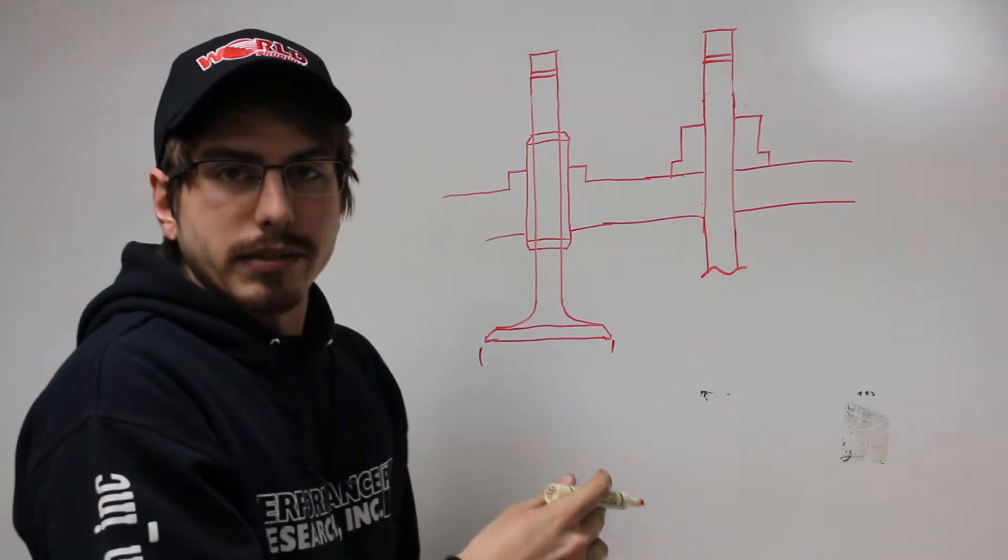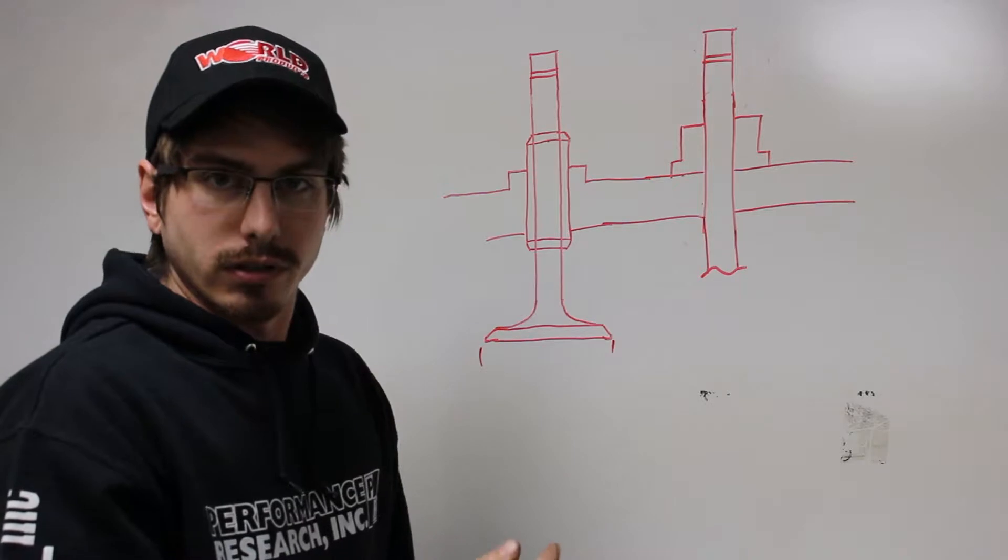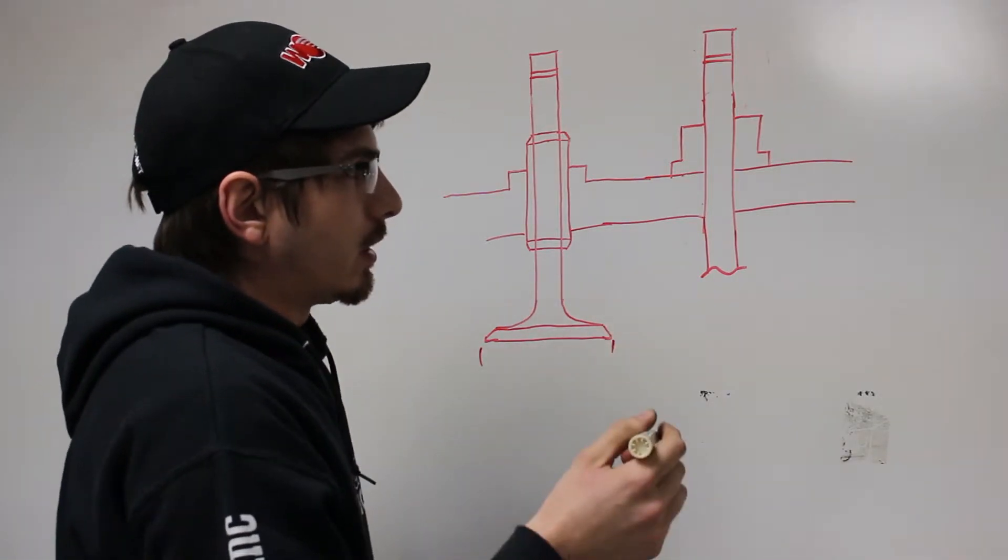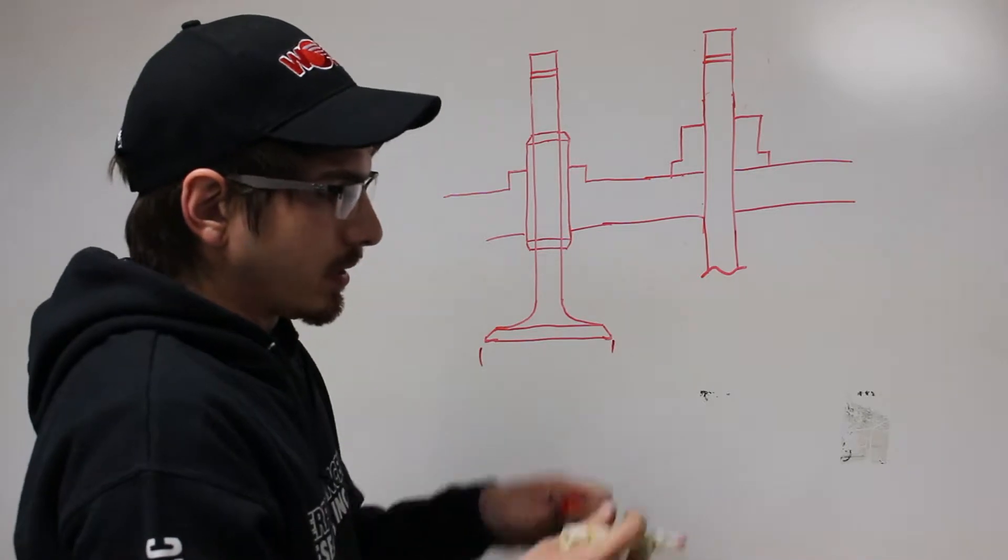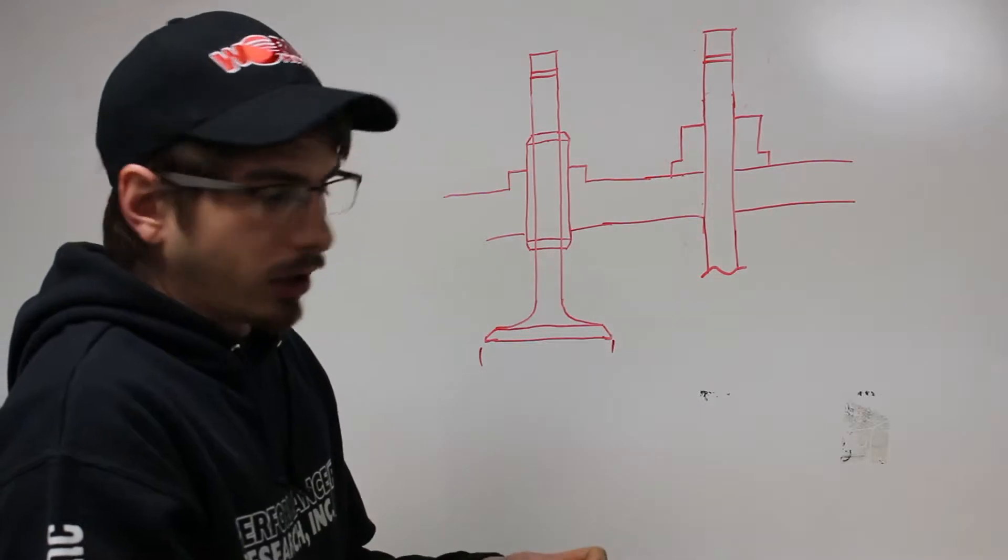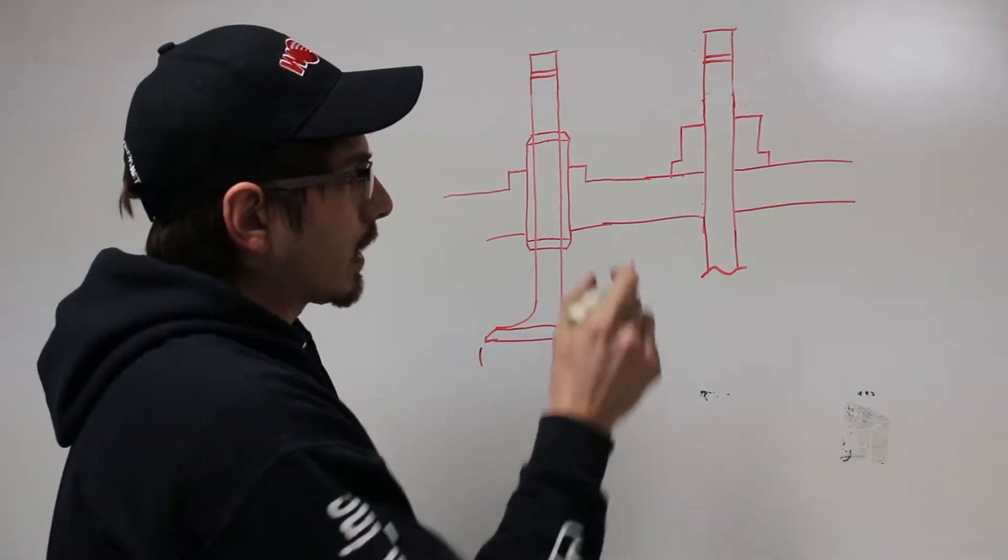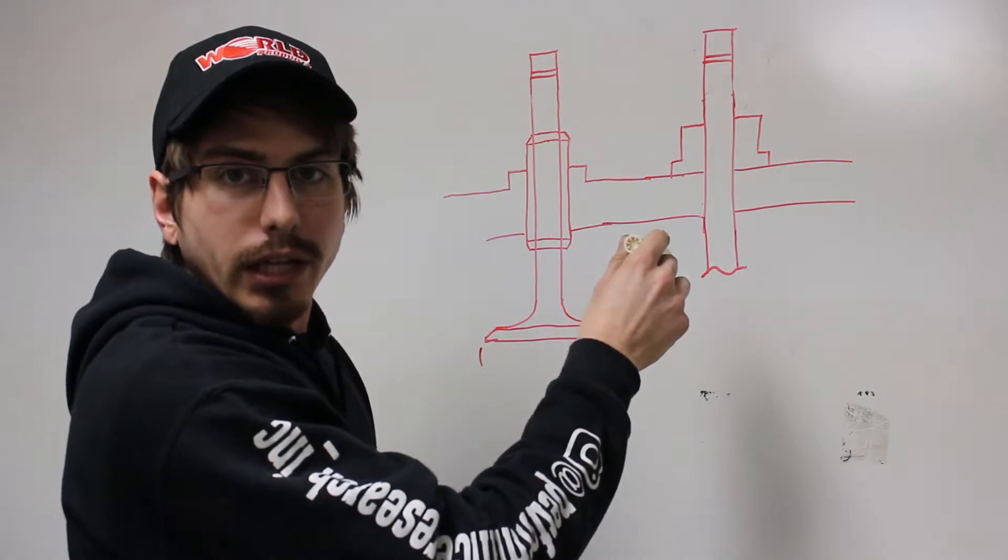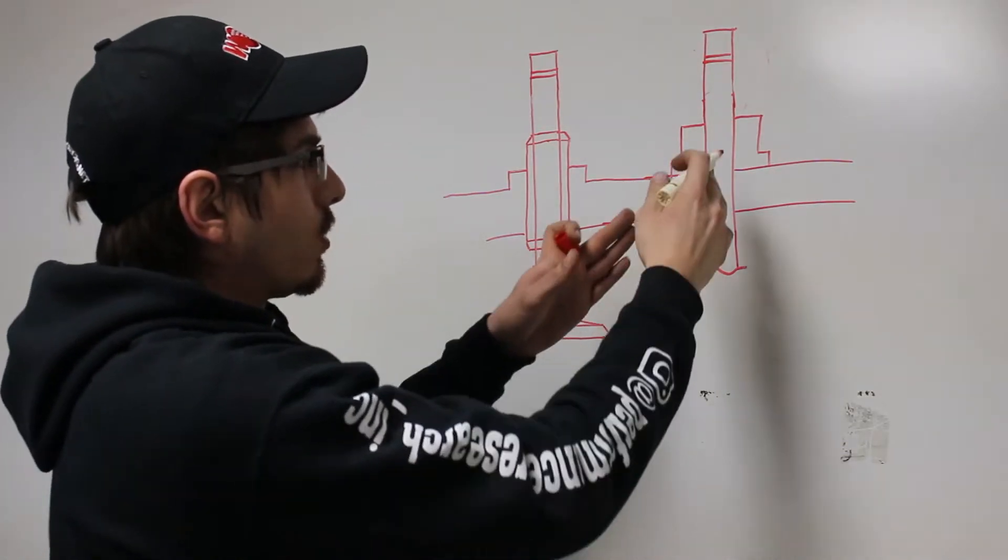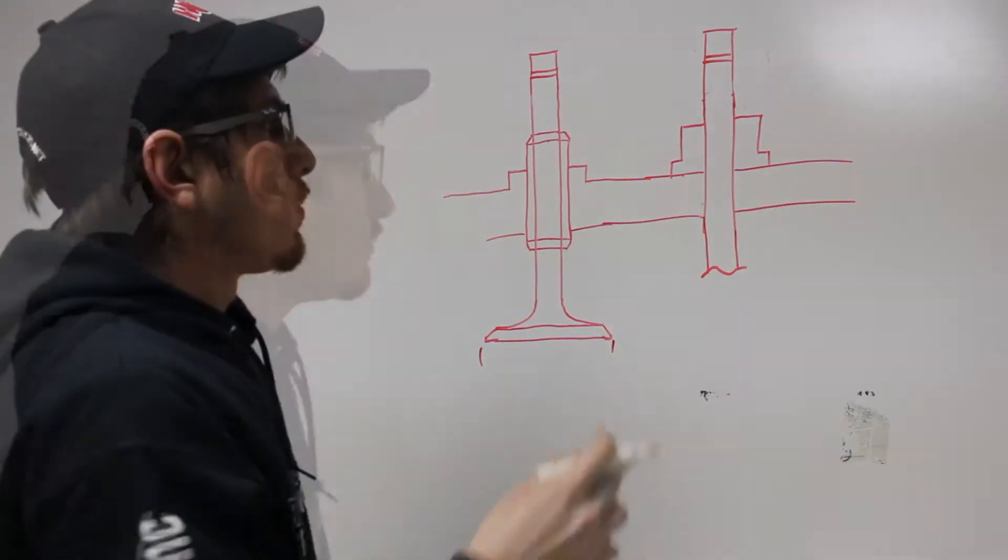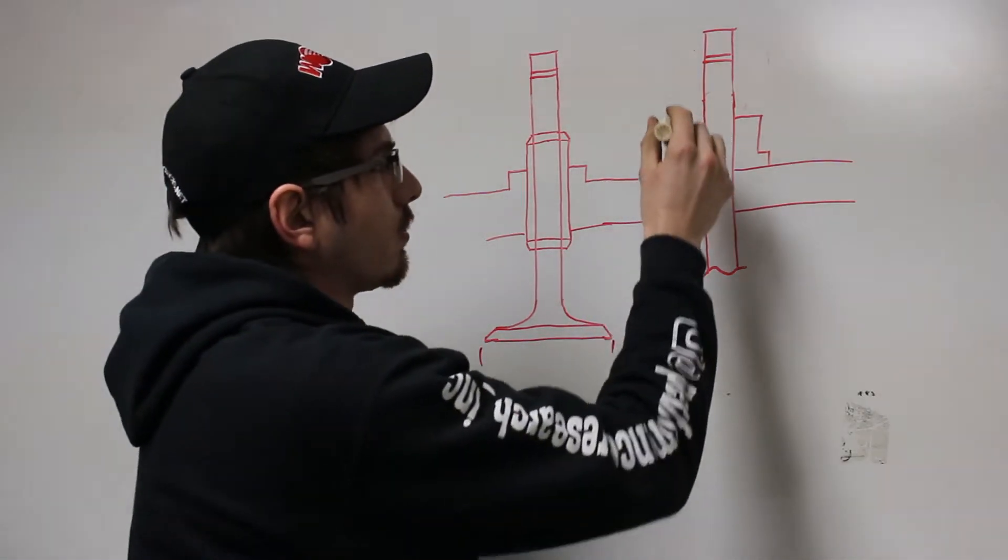It's just going to slop around. So what you have to do is you have to replace the guides. Now, the guides needed to be replaced anyway, so we just kind of took advantage of the situation. But in an aluminum head, the guide is actually a separate piece that is pressed in to a bore in the aluminum. Back in these days, the guide is just as cast with the head.